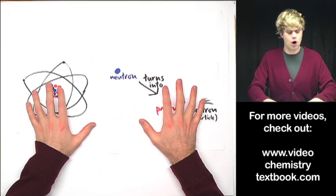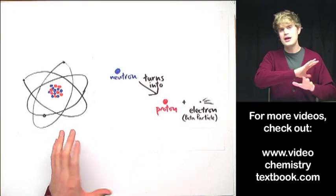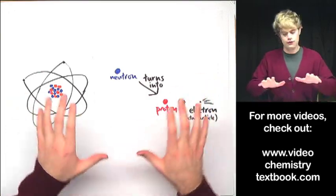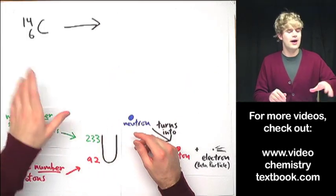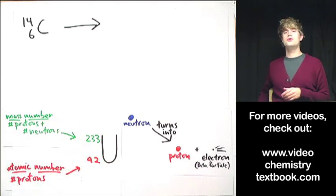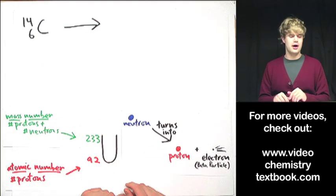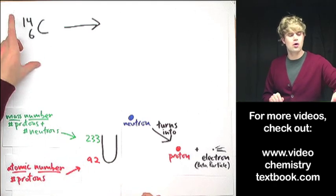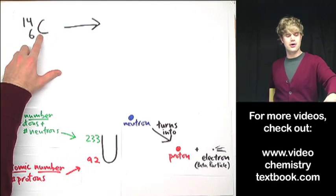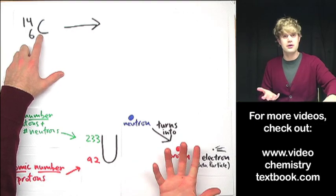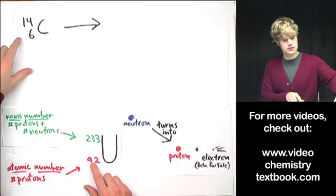So that is an overview of beta decay. Now let's look at how we write nuclear equations for beta decay processes. We want to know what happens when carbon-14 undergoes beta decay. Whenever we do these nuclear kind of problems, atoms are always written in what we call isotope notation here. There's a letter that represents the element we're dealing with, so here it's C for carbon.